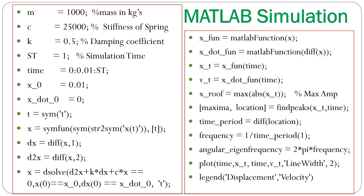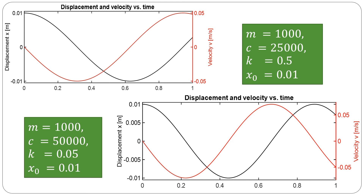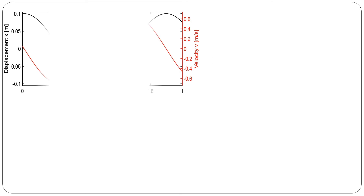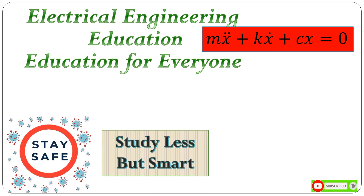The displacement and velocity profiles are plotted for a mass of 1,000 kg, stiffness of 25,000, and damping coefficient of 0.5. The second plot is for mass of 1,000 kg, increased stiffness to 50,000, and damping reduced to 0.05 — ten times less than the previous case. These results are shown for different initial conditions. In this simulation we have increased the value of the damping coefficient and its effects can be seen. One can have more extensive analysis by looking at different values of mass, spring stiffness, and damping coefficient, and also see the effects of initial conditions for a better comparison.